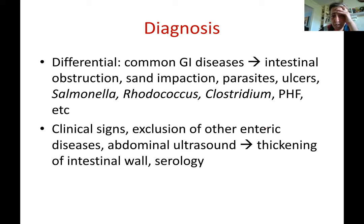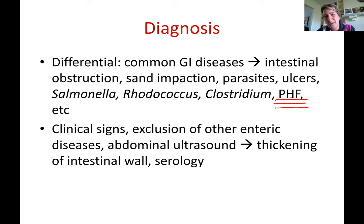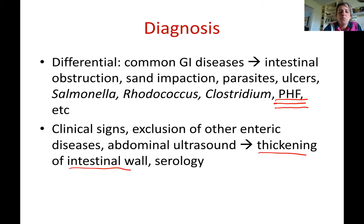The differential diagnosis includes other common GI diseases: salmonella, Rhodococcus equi (which causes pneumonia but makes foals sick and unthrifty), Clostridium, intestinal parasites, intestinal obstruction, and Potomac horse fever — which is usually more acute with severe diarrhea but can be chronic in some cases. Diagnostics include ultrasound to detect thickening of the intestinal wall, serology to check for antibodies, and bloodwork which will show low protein in the blood.